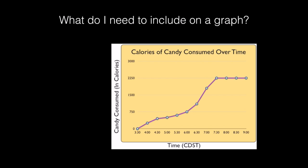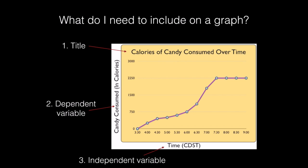Also, whenever you make a graph, you need to make sure that you include all the following. First, always have a clear and specific title that explains what your graph is showing. Next, your dependent variable belongs on the y-axis. Third, your independent variable belongs on the x-axis. Fourth, if units are part of one of your variables, you need to write the units in parentheses next to the dependent or independent variable. Fifth, you need to write a scale along the x- or y-axis.